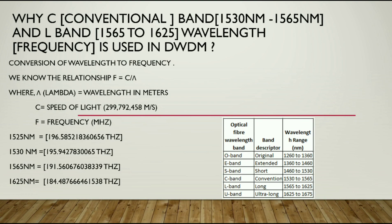Here you are seeing the C is the conventional band which has the range from 1530 nanometers to 1565 nanometers and there is the L band whose range is 1565 nanometers to 1625 nanometers.